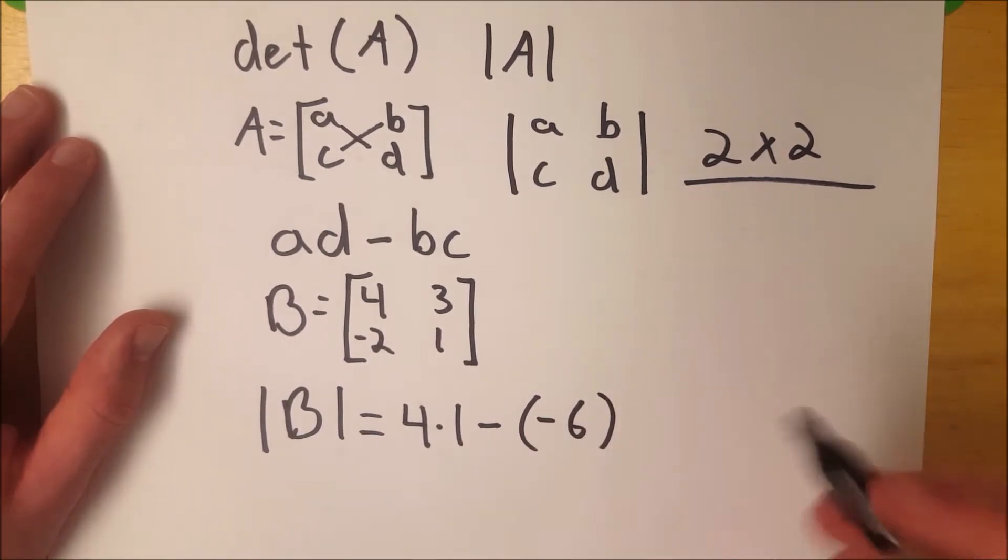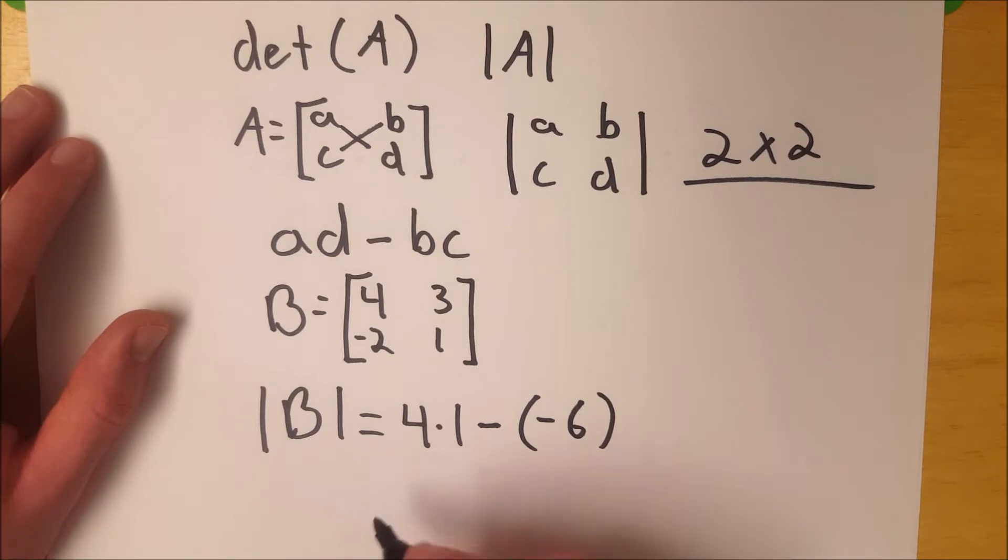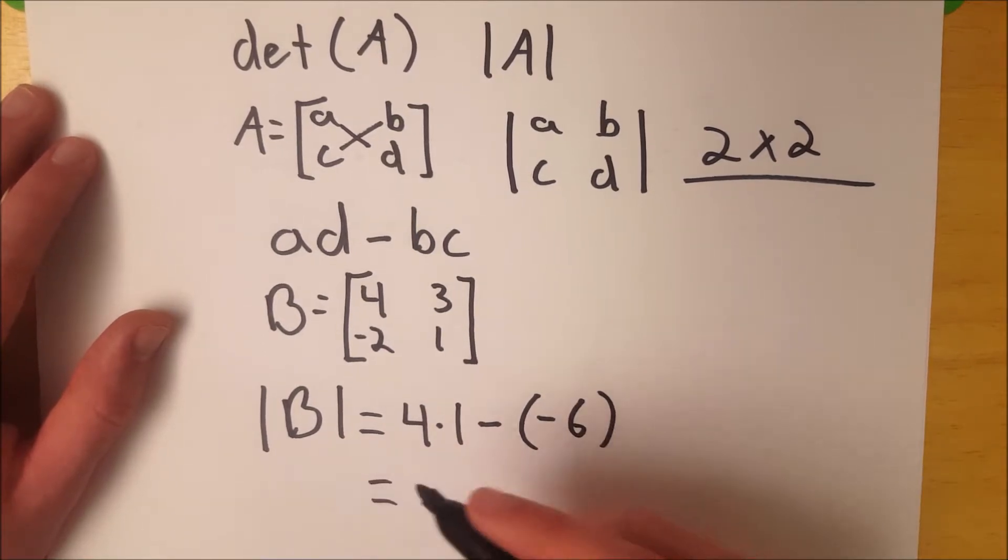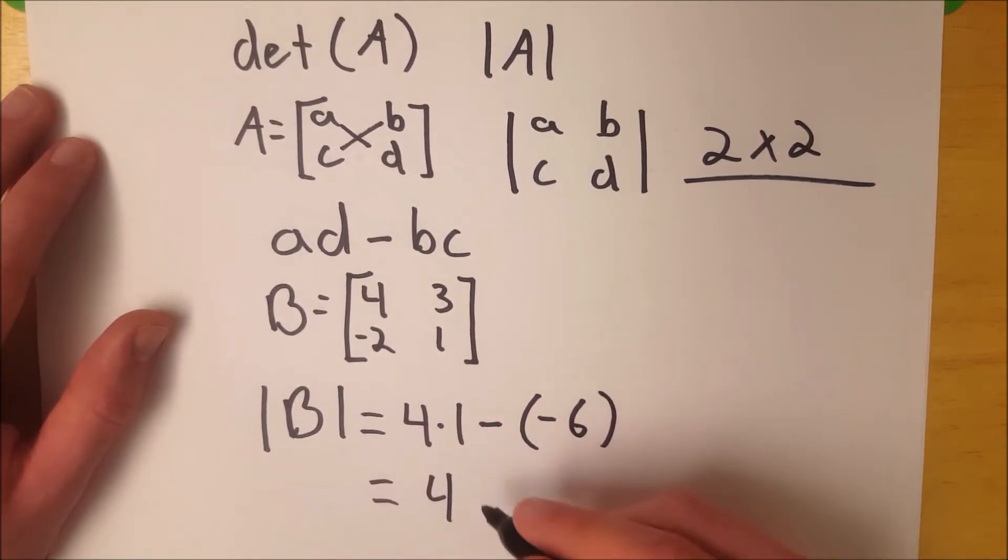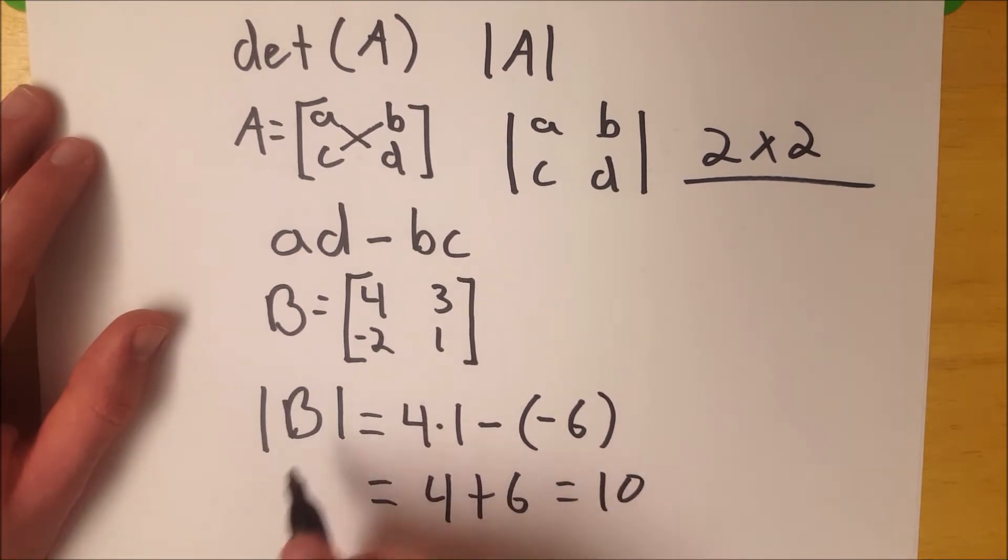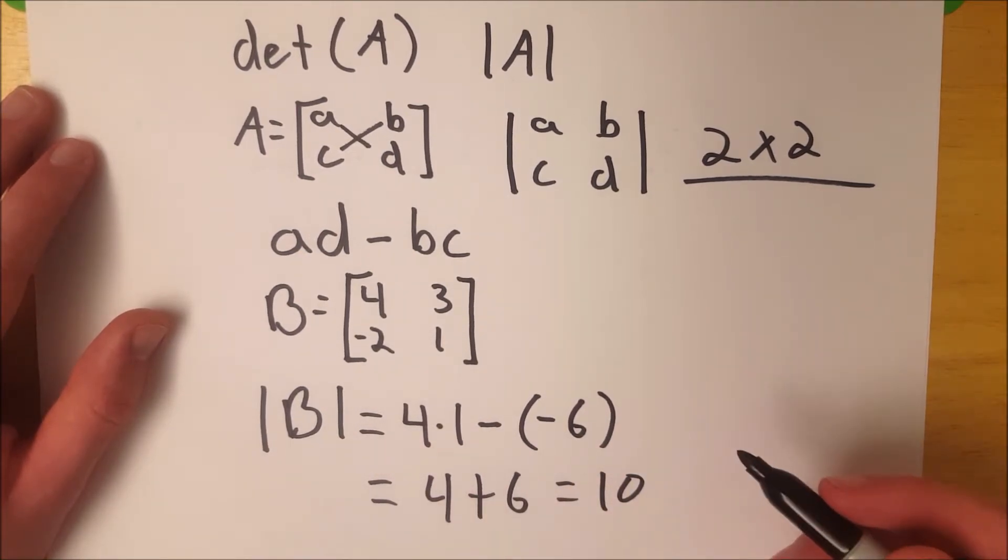Sorry, I wrote it out there, not there. I hate being inconsistent, but it happens to the best of us. So this comes down to 4 minus negative 6 is plus 6, so this is equal to 10. So the determinant of B is equal to 10.